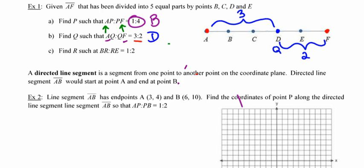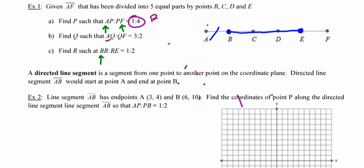And then the last one they want me to do is find point R such that the ratio between points B and R and R and E is 1 to 2. I immediately notice that this ratio looks a little bit different. I'm only looking at three pieces. So I've got to take a look at where my endpoints go. Point B is one of the two endpoints. Point E is the other endpoint.